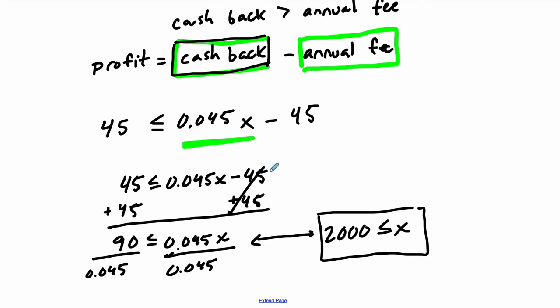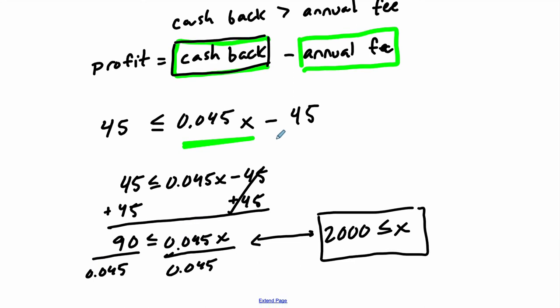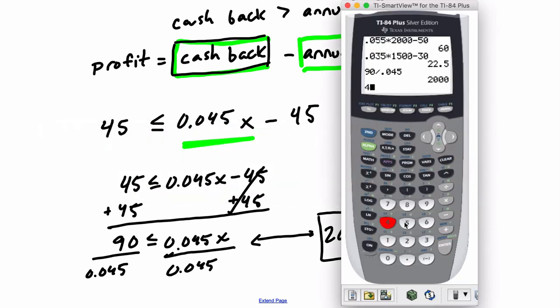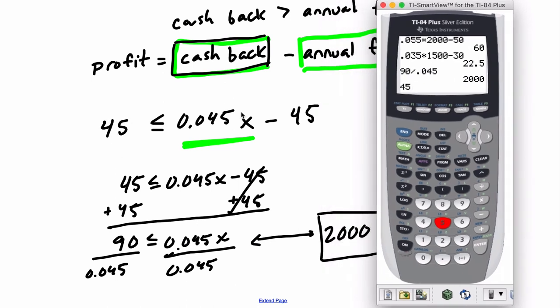And you could also say, how much would you have to spend just to break even? And that's also an interesting calculation. In that case, it would be greater than or equal to 0. So solving that, you'd end up doing, just take a look at that for fun, $45, you want to break even, so it's going to be a 0 over here. We could do the same math. We add 45 to both sides. It's 45 divided by 0.045.